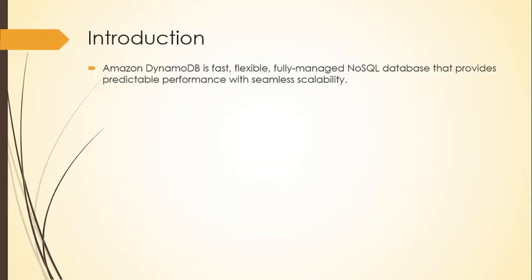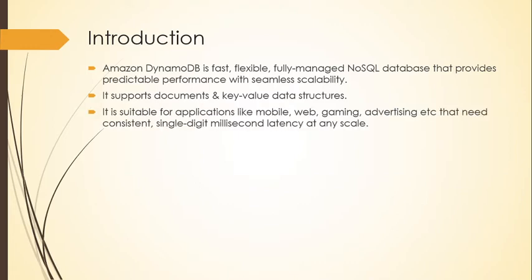Amazon DynamoDB is a fast, flexible, fully managed NoSQL database that provides predictable performance with seamless scalability. DynamoDB is fully managed, so you don't need to worry about software installation, configuration, patching, or maintenance. It is NoSQL, so unlike relational databases you don't need to pre-define your schema — it is schemaless and supports document and key-value data structures.